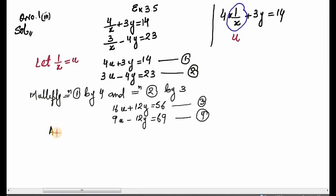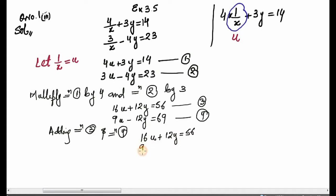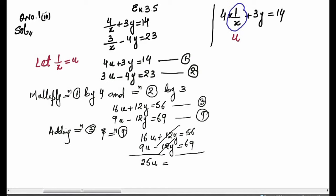We add Equation 3 and Equation 4. The 12y and -12y cancel each other. We get 16u + 9u = 56 + 69, which gives us 25u = 125.